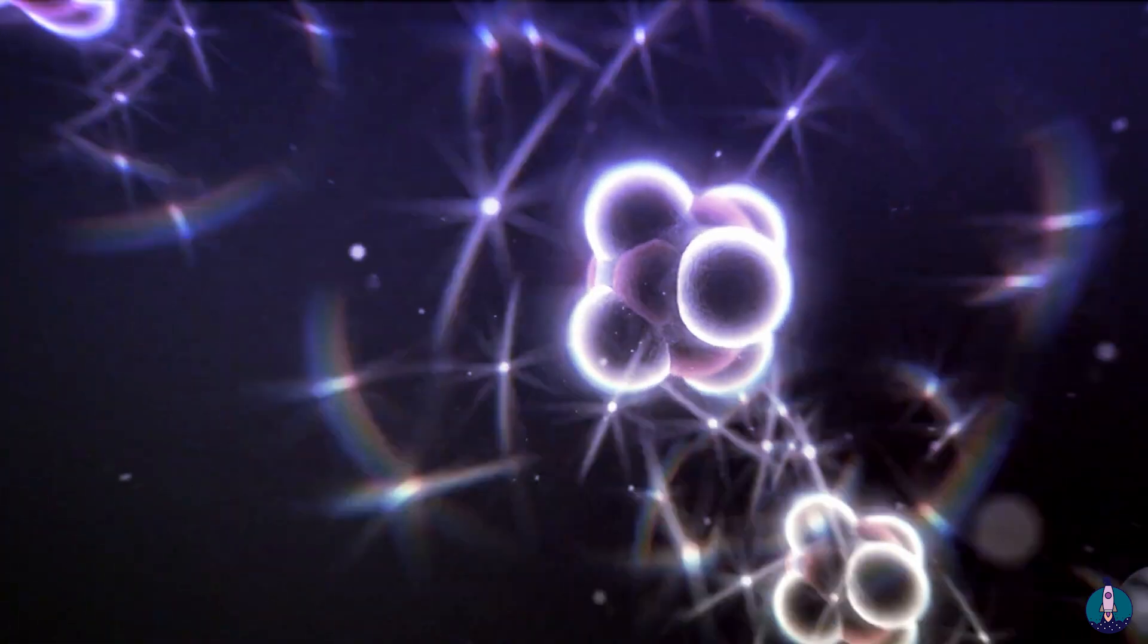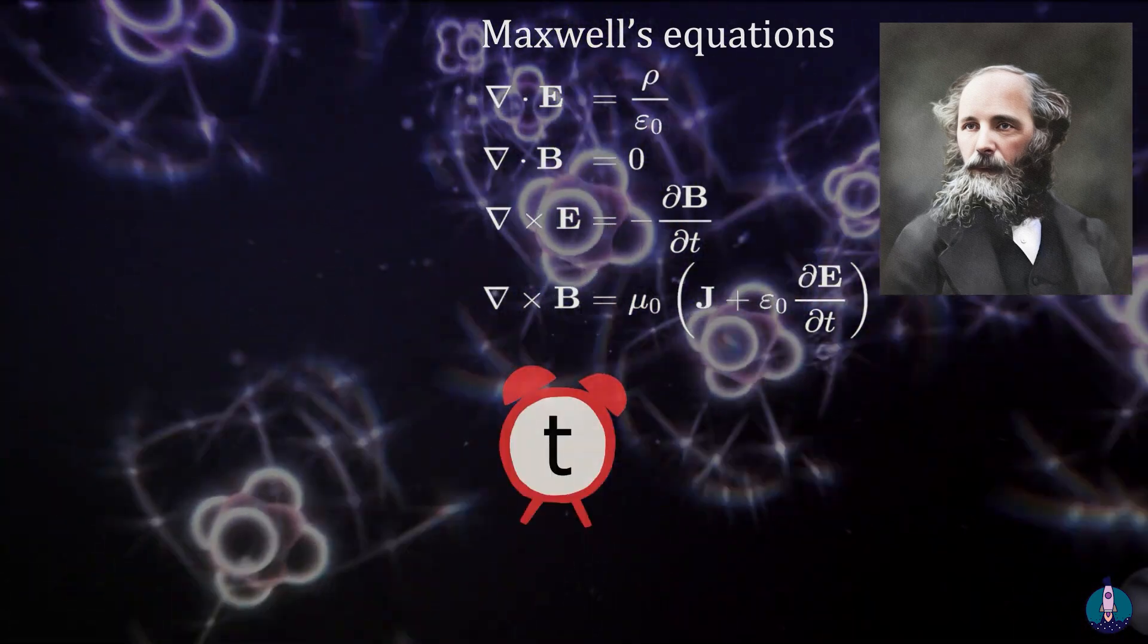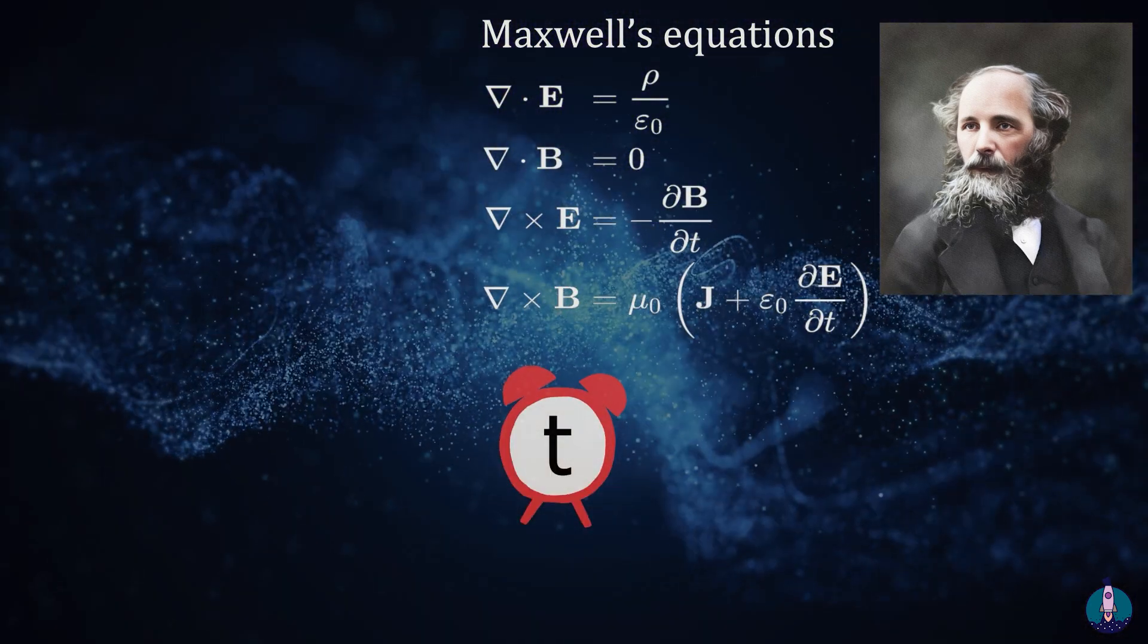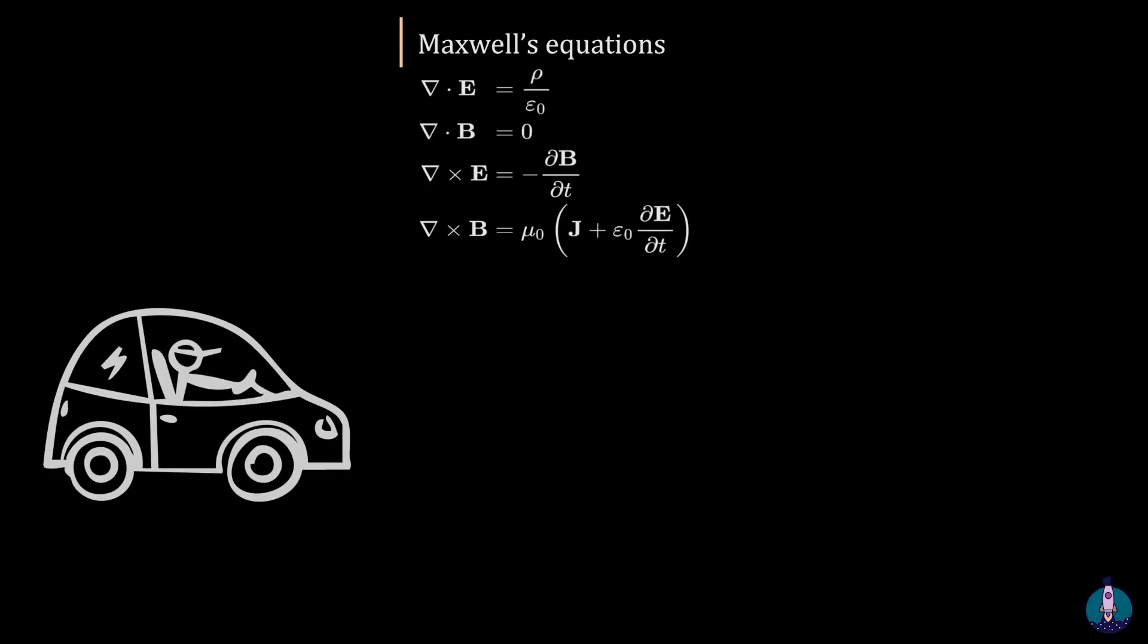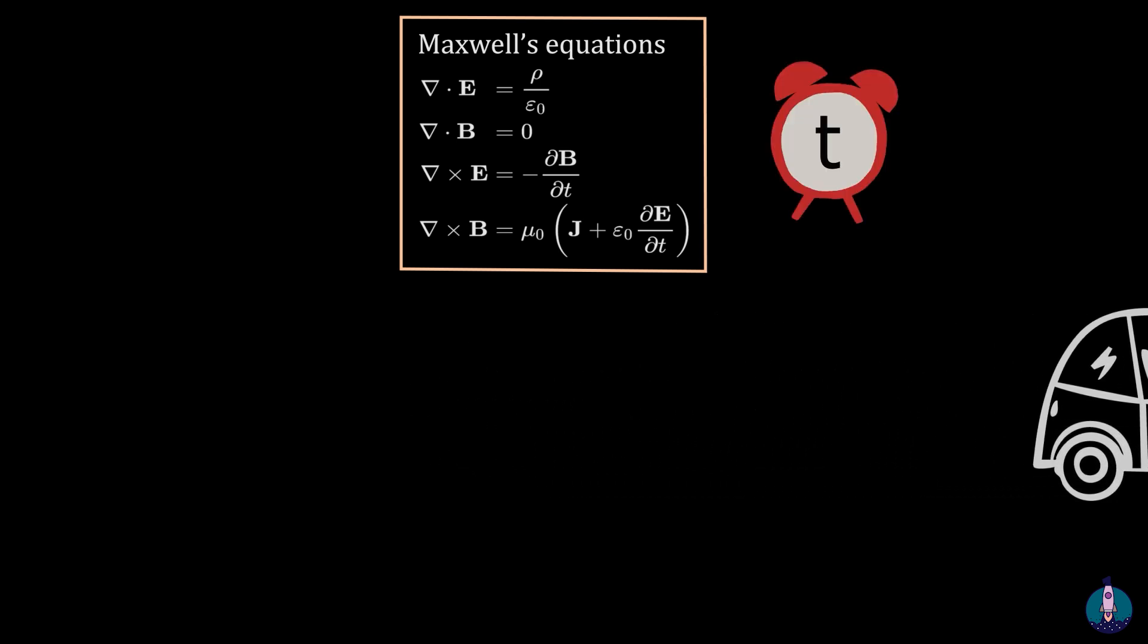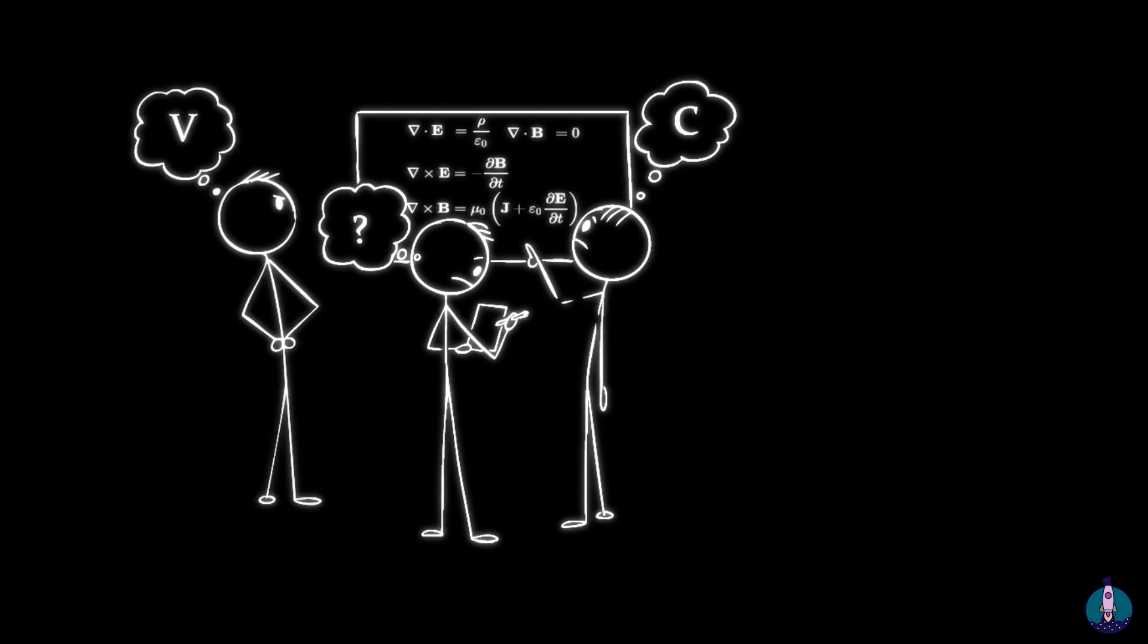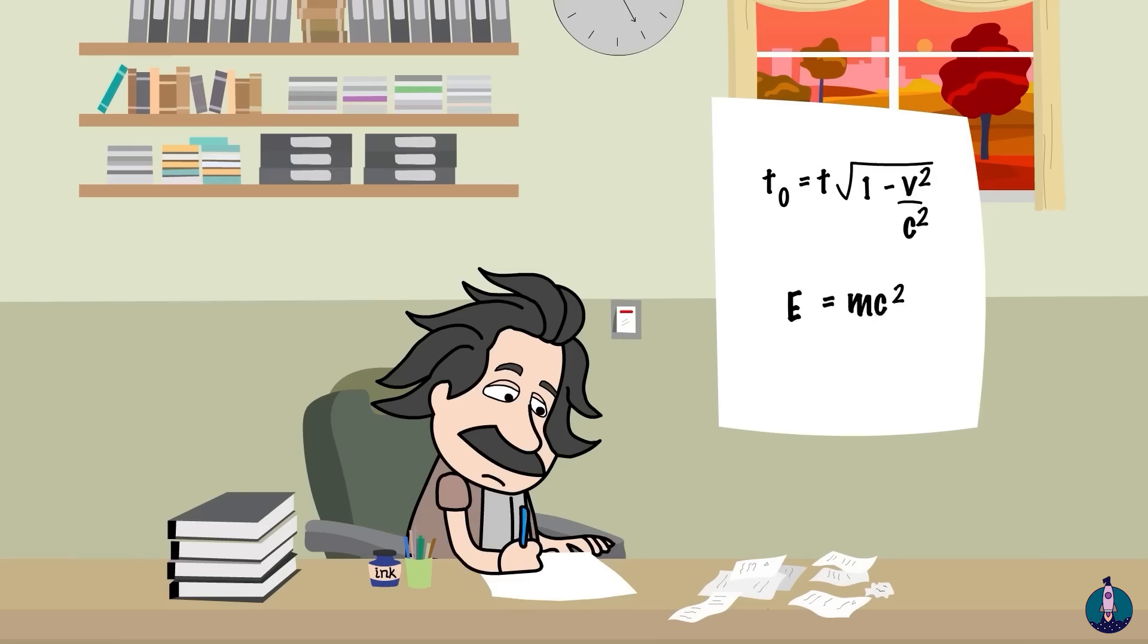Electricity and magnetism are described by Maxwell equations, which use the usual time variable t. But there is something strange about them. If you are moving at a certain speed, those equations stop working, unless you replace time with a new variable t dash. Mathematicians had noticed this weird quirk, but no one knew what it meant until Einstein figured it out.